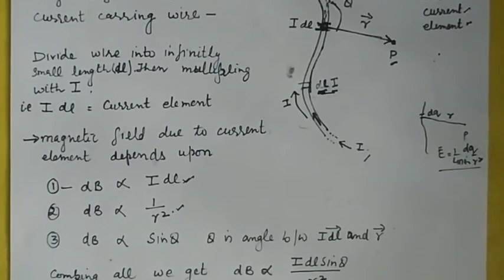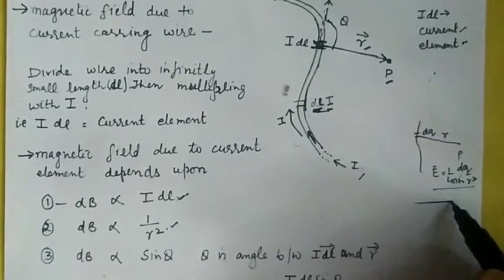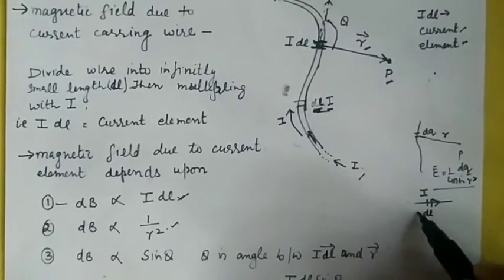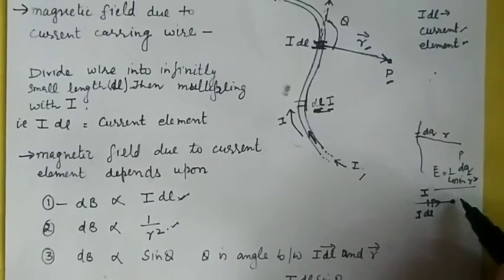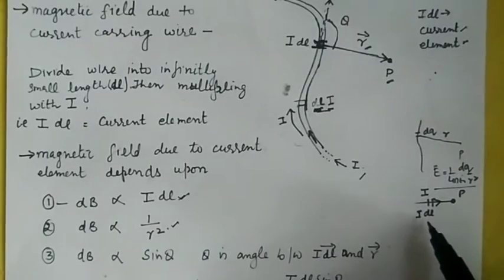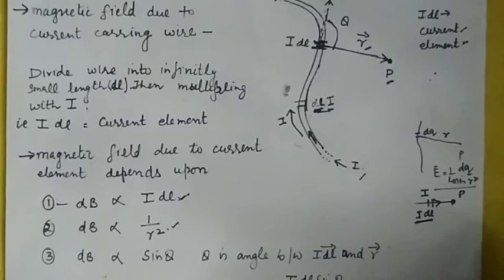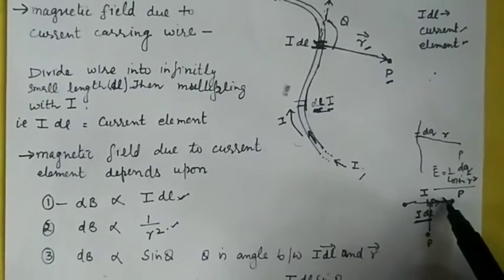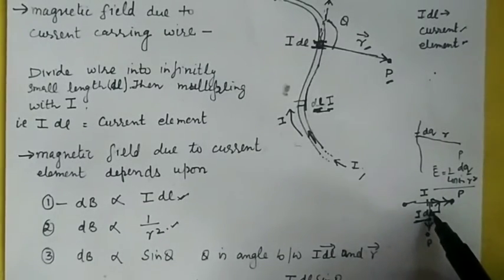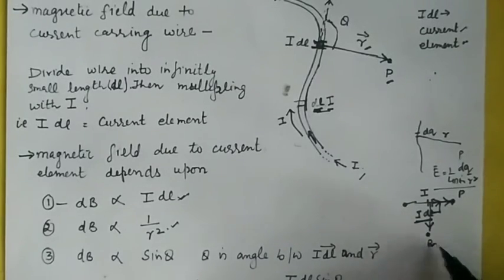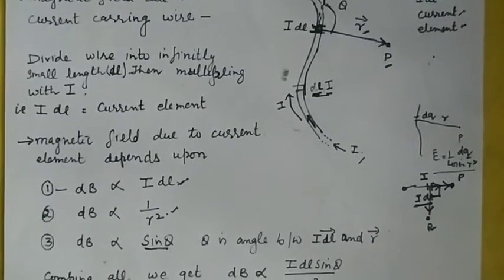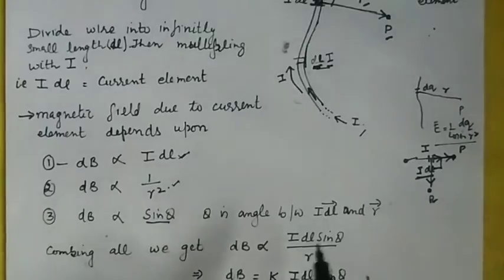The magnetic field also depends on one more factor. Suppose the current is flowing in a certain direction and we divide it into small current elements. If we take point P along this direction or on the backside, the magnetic field at that point is equal to zero. But if we take P in the perpendicular direction, where the angle between idl and r is 90 degrees, the magnetic field is maximum. So the magnetic field depends upon sine theta — when theta is 90 degrees it is maximum, and when theta is 0 it is minimum. Theta is the angle between idl and r.